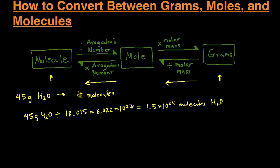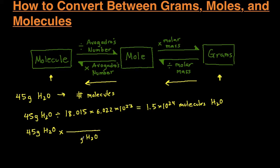That's the shortcut. Now I'm going to show you how to do this with dimensional analysis, so you can actually show your work on your homework or on your test. So we'll start again with 45 grams of H₂O, then divide by molar mass to get to moles. With dimensional analysis, you multiply by a factor — it's all about canceling out units. So if you have grams of H₂O, you put grams of H₂O on the bottom to cancel it out, and moles of H₂O on top since that's where you're going. We put the molar mass 18.015 on the bottom.